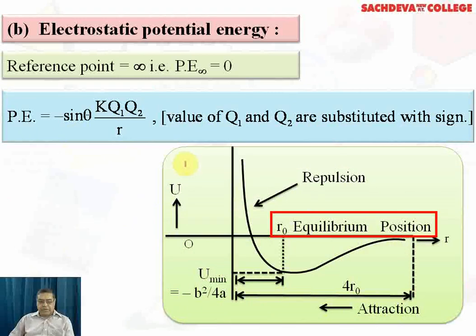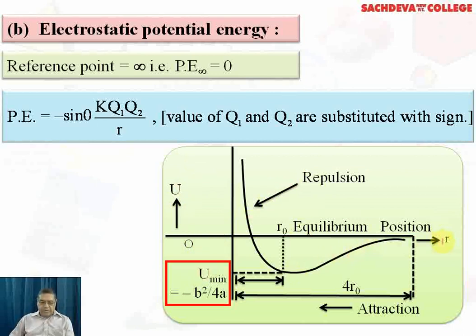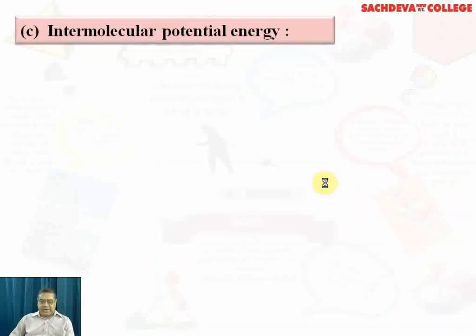A graph is shown where the equilibrium position is indicated after r₀. Repulsion is shown by the graph moving upward toward the y-axis, while attraction is shown toward the origin. The minimum potential energy (u_min) is derived from the quadratic formula as −b²/4a.